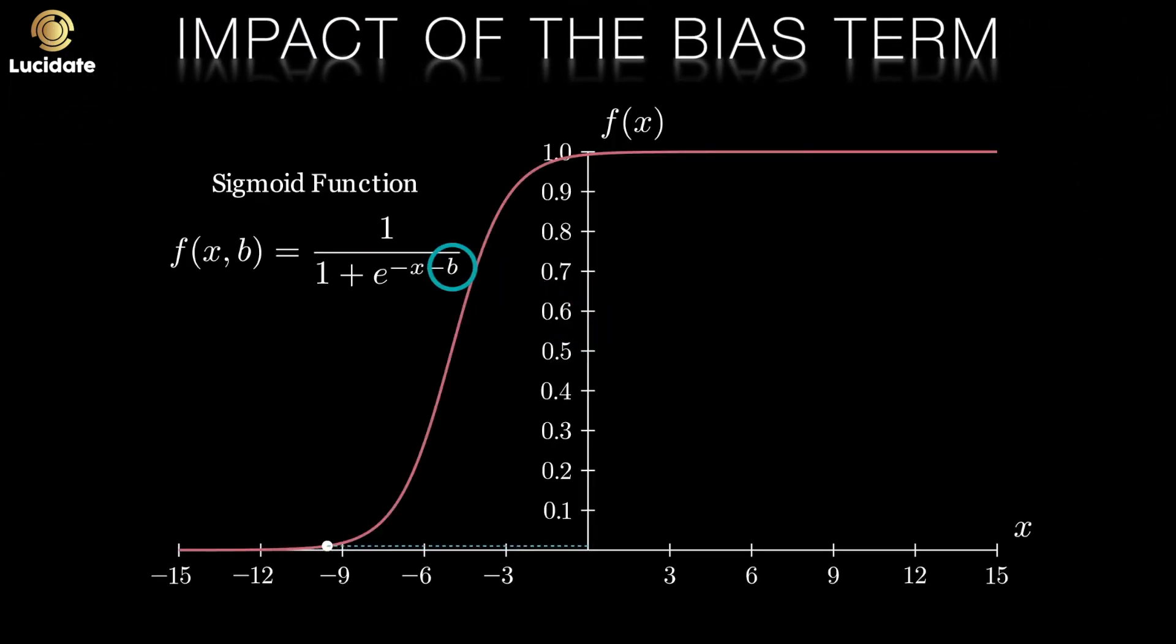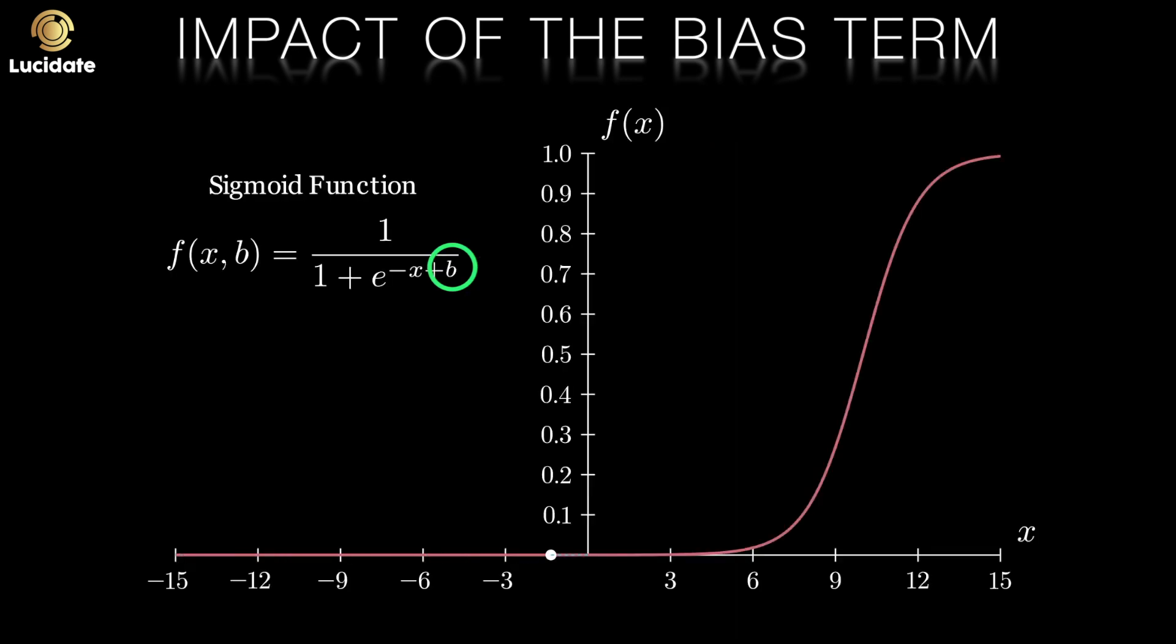This chart shows the impact of a negative bias. This has the effect of activating the neuron for lower levels of inputs. This chart shows the effect of a positive bias. This requires the inputs to be much larger to excite and activate the neuron.